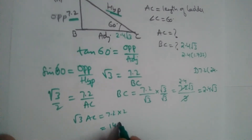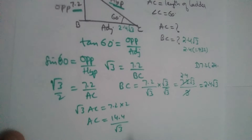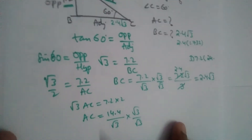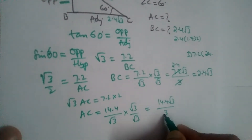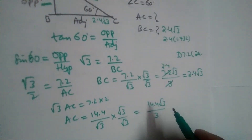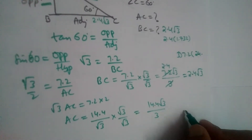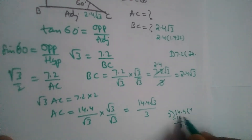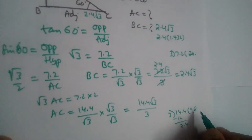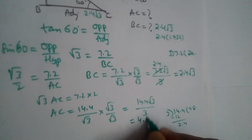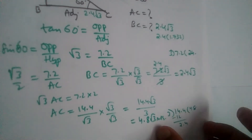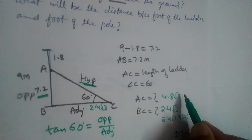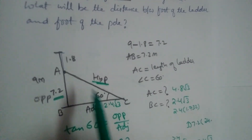AC = 14.4 divided by √3. Since √3 is in the denominator, we rationalize: 14.4√3 divided by (√3 × √3) = 14.4√3 divided by 3 = 4.8√3 meters. So AC = 4.8√3. You can substitute √3 as 1.732 and multiply by 4.8.